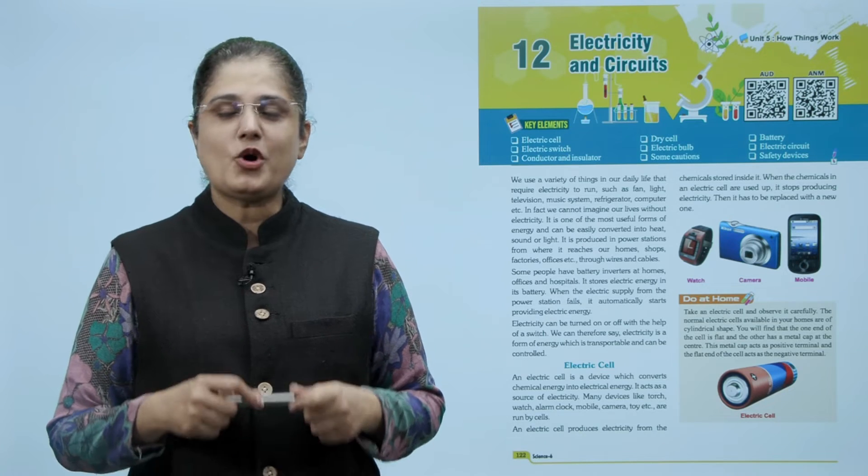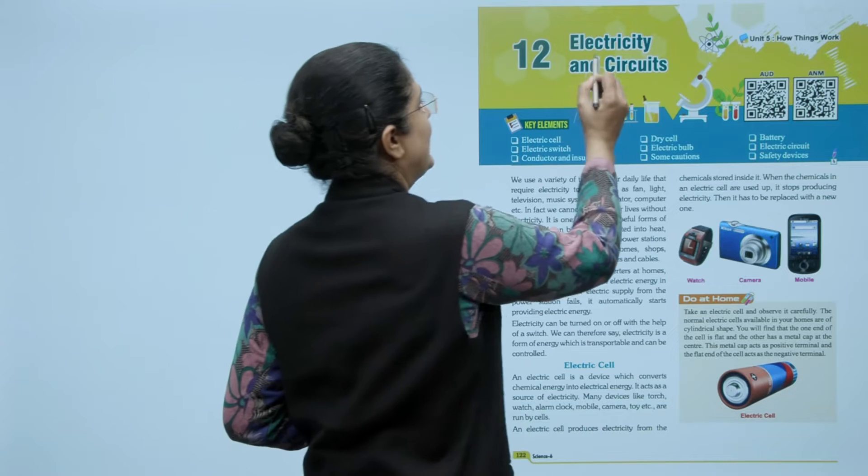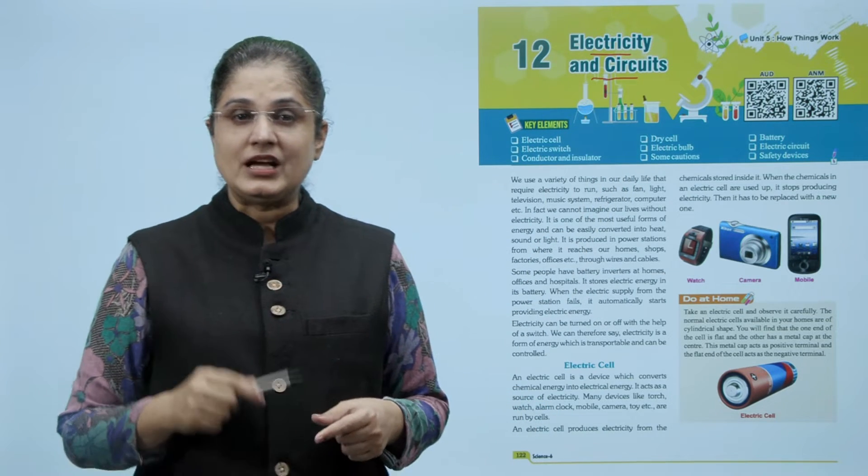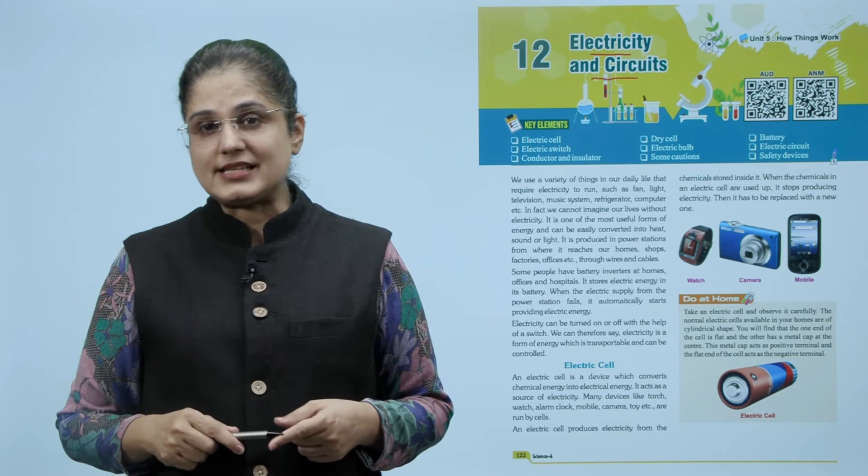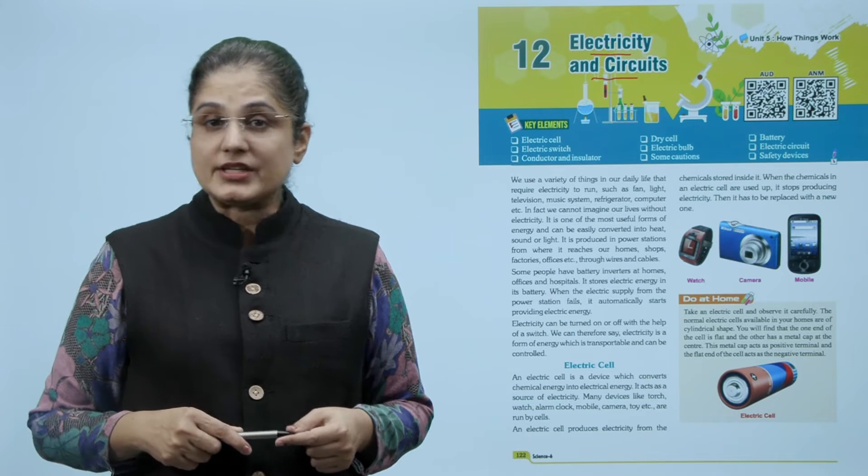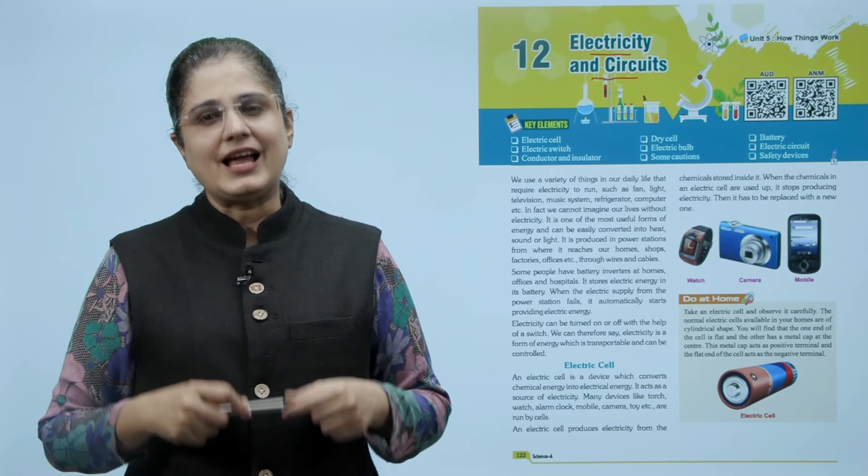Hello children, hope all of us are well. Now the topic for today is electricity and circuits and the key elements are electric cell, dry cell, battery, electric switch, electric bulb, electric circuit, conductor and insulator, some cautions and safety devices.